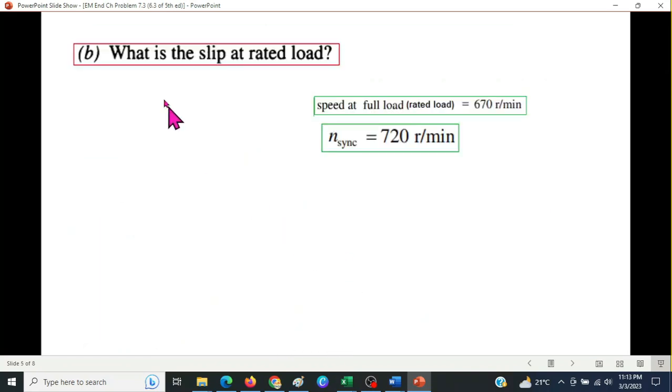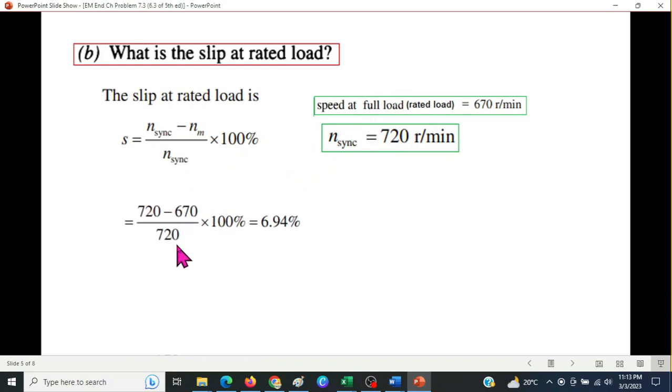Now part B. What is the slip at the rated load? These two are given. We know the slip formula: n-sync minus n-m divided by n-sync. So we plug in the values. So our slip at the rated load will be 6.94%.